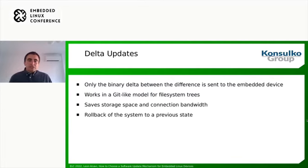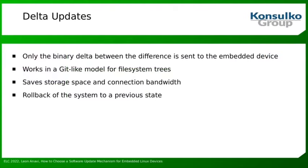The next strategy is delta updates. In this approach, only the binary delta — the difference between the new and old image — is sent to the embedded device. It works in a Git-like model for file system trees. This way we save storage space, and furthermore we save connection bandwidth because delta updates are significantly smaller compared to the artifacts needed for A-B updates. It is also possible to roll back the system to a previous state.